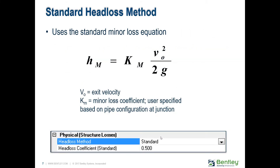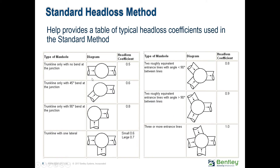More typically you see the standard head loss method. It uses the same equation where we have a K multiplying the velocity head, and you specify what your K is — in this case 0.5. You can look this up, and it tells you the K values to use. If you have a trunk line only with no bend at the junction, use 0.5 for the standard coefficient. If you have something more convoluted, it is 0.9. So it's a guide.